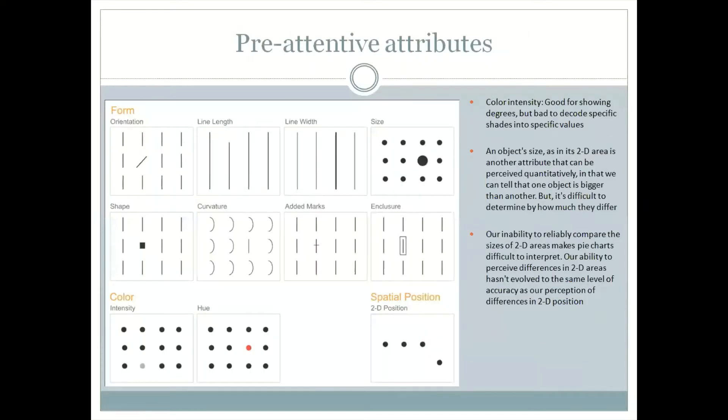Similarly, these are the popular kinds of pre-attentive attributes that exist. You have form, under form you have all of these options. Then you have color, under color you have these two options and spatial positions. If you look at it, these pre-attentive attributes form the basis for all the charts, graphs, and pies that we use in our day-to-day work.